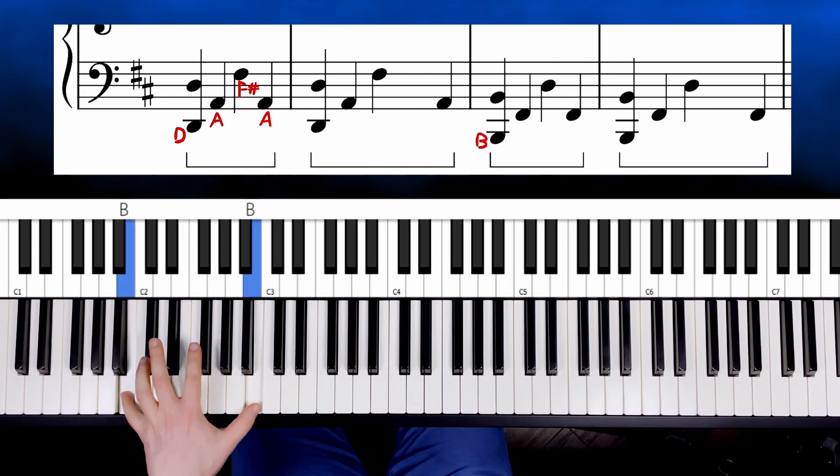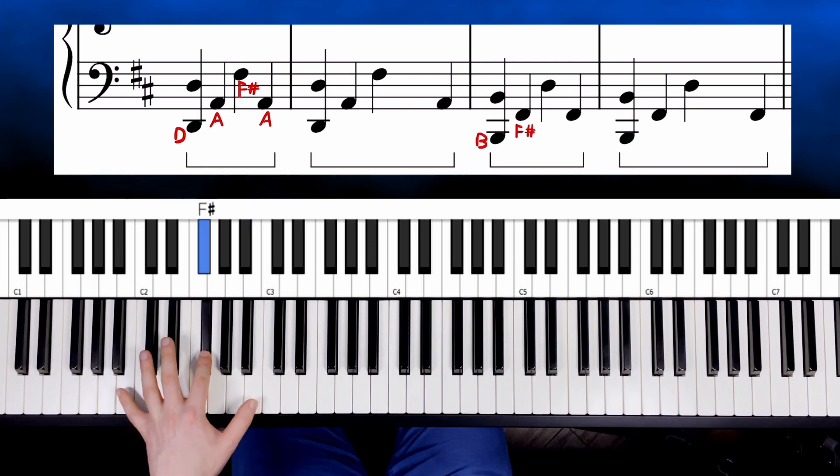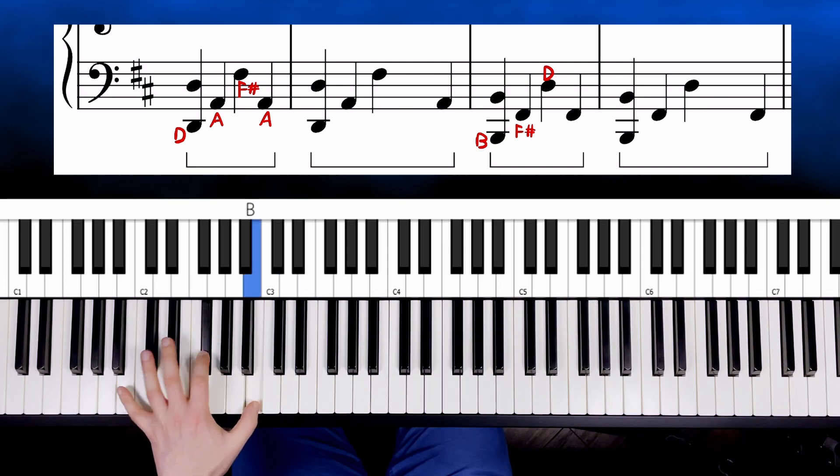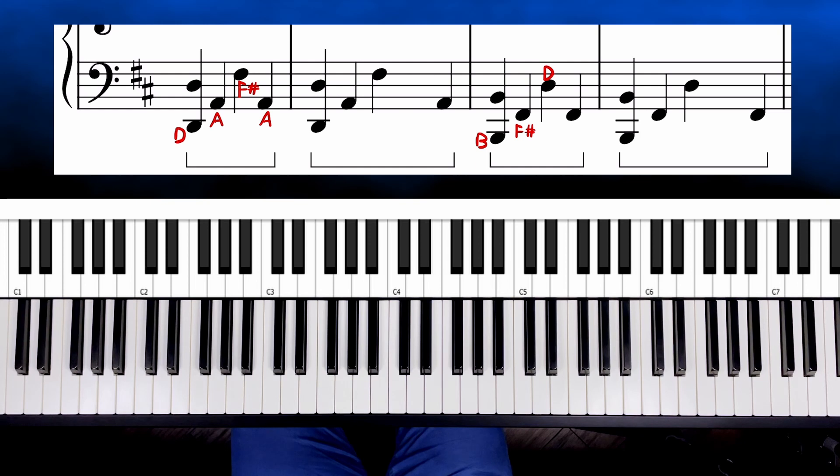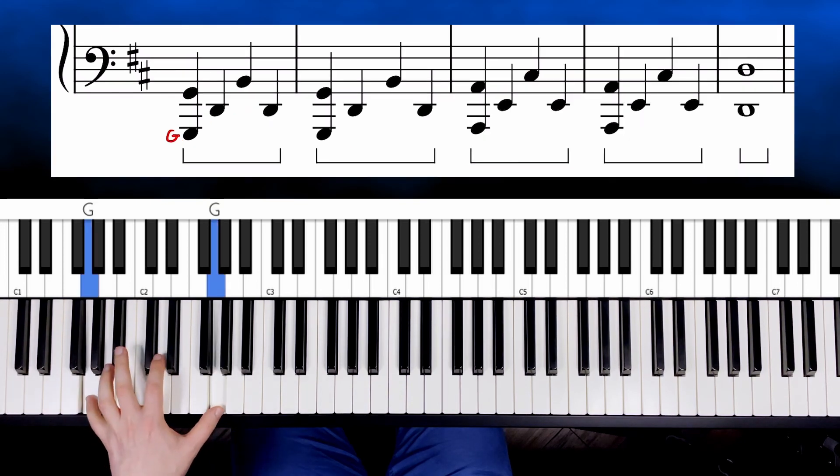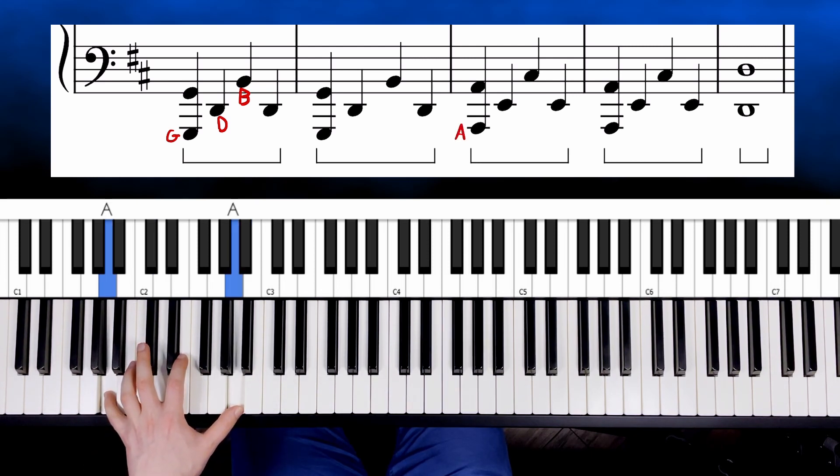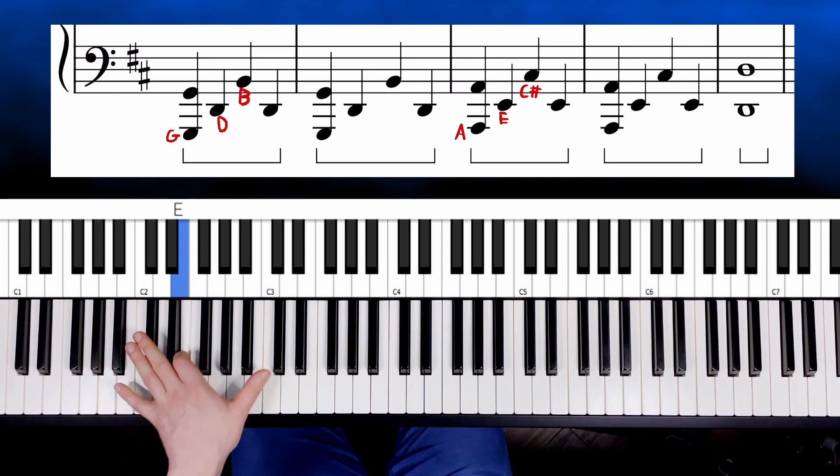Then we have octave on B, the fifth is F sharp, and the third is D. Next we have octave on G, the fifth is D, and the third is B. And the last octave A, so the fifth is E, and the third is C sharp.